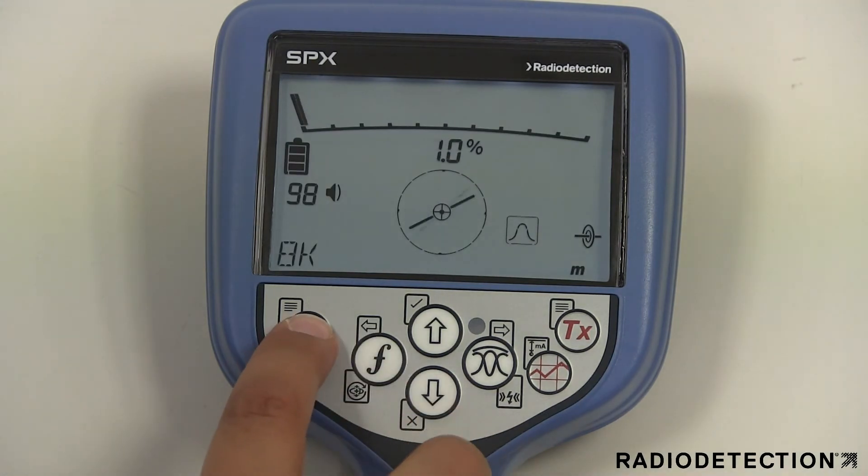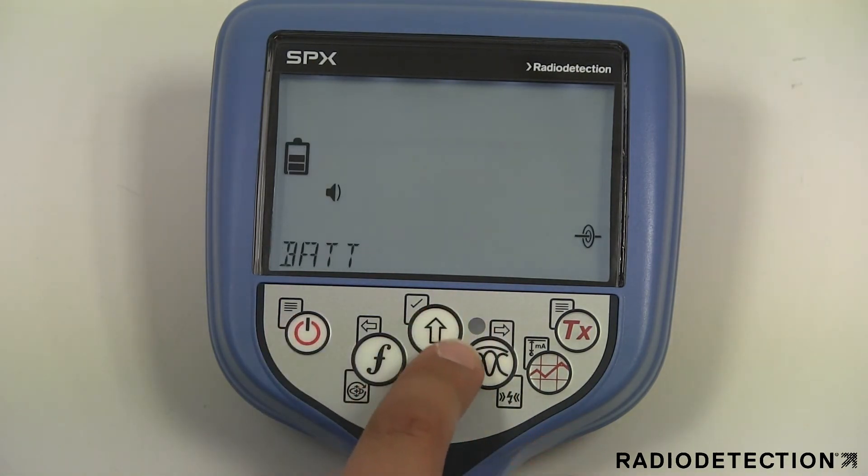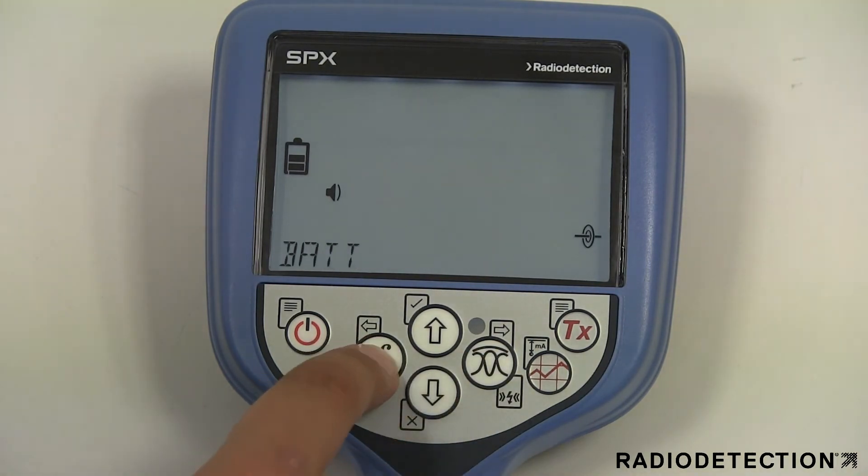When you power on the locator for the first time, you will need to select the battery option that you are using. The precision locator range is shipped as standard configured to use D-cell alkaline batteries.